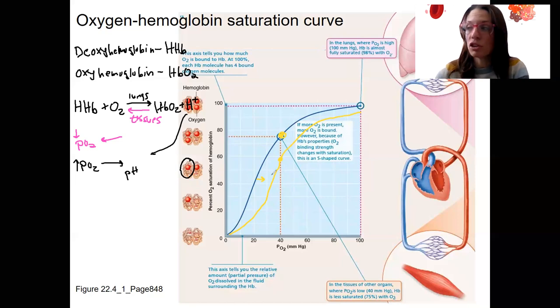So when we shift to the right, we're lowering affinity. When we shift to the left, we're increasing affinity of hemoglobin for oxygen. We will see this with examples of things that do this and why this matters next.